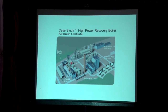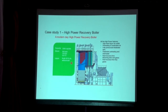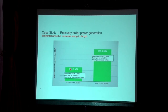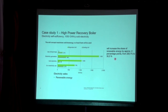In case study 1, a recovery boiler of 7200 TDS in Scandinavia has all the high power features and operates at 110 bar and 515°C, including an ash treatment system. The mill increased power generation from 205 MW with a conventional design to 240 MW with the high power features. The mill reports that it reduced fossil fuel consumption to 0% and now meets its complete pulping energy demand from the recovery boiler, converting to a renewable energy mill and reducing its carbon footprint with support from Scandinavian government incentives.